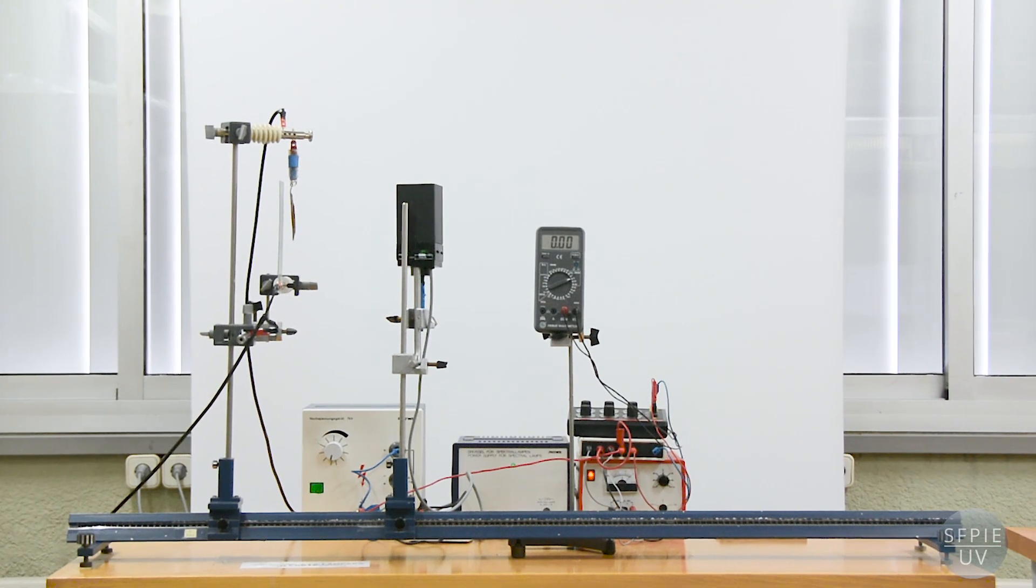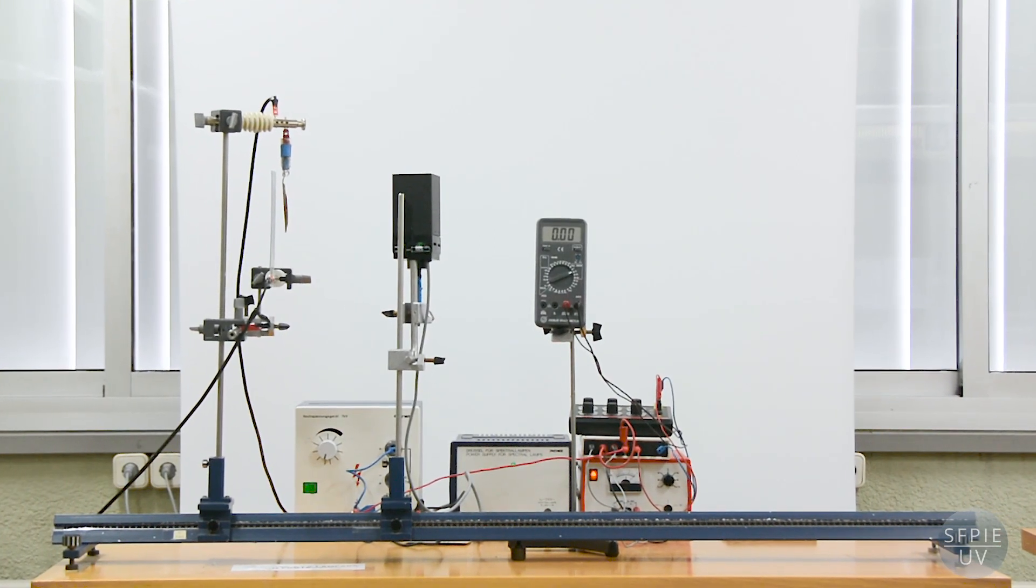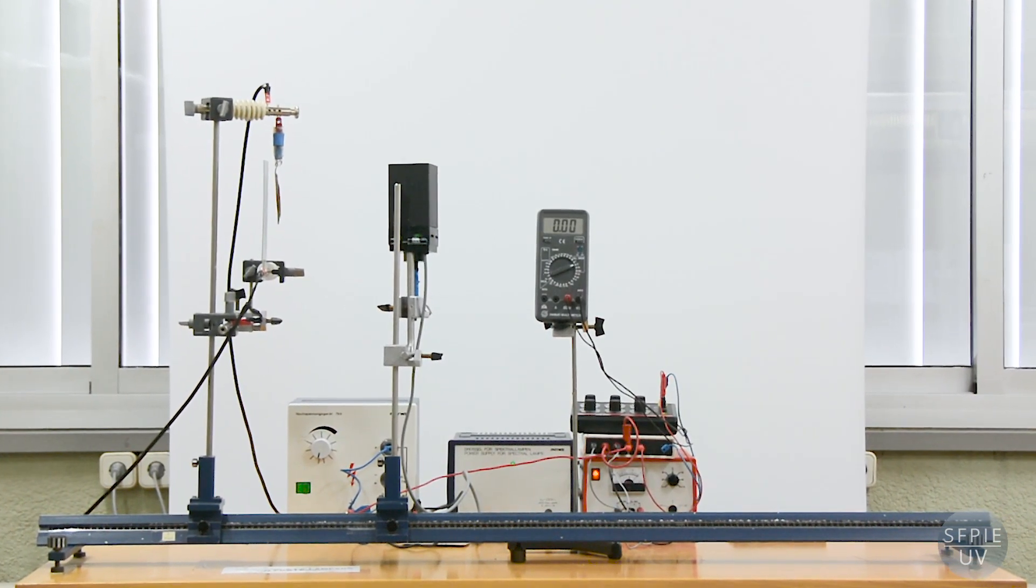Therefore, we can conclude that the impact of ultraviolet light on the plate produces the emission of positive or negative electric charges. We can verify that it is an emission of negative charges or electrons by refining our experimental setup.